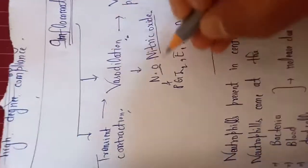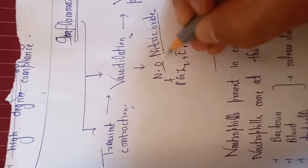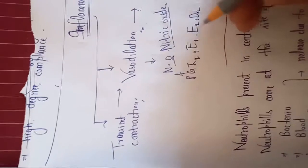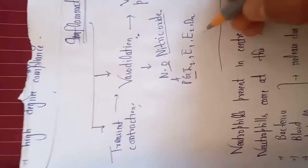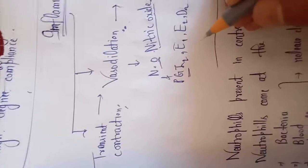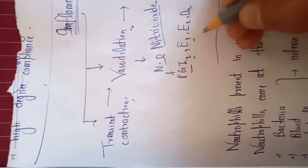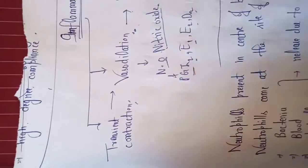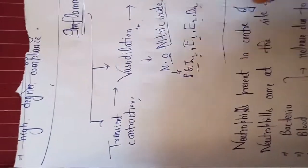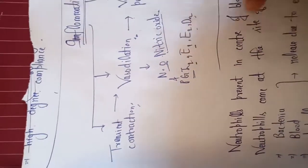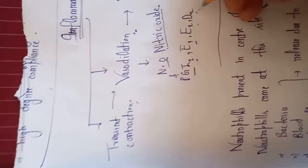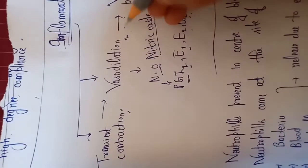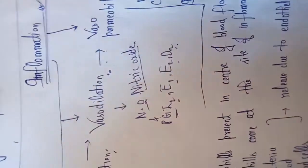In the CNS, the inhibitory neurotransmitters include GABA and glycine. Nitric oxide also works as an inhibitory neurotransmitter. Other chemicals that cause vasodilation include prostaglandins: PGE2 (prostaglandin E2) and PGD2 (prostaglandin D2). All of these prostaglandins cause vasodilation.